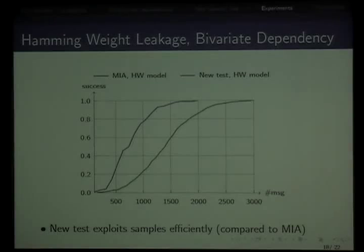We move to a slightly more challenging case. The leakage function is still simple, but now dependencies are bivariate. Correlation and least squares are not applicable as such. You need a distinguisher that can exploit multivariate dependencies. We compared our distinguisher to mutual information, and both work. But this new test is more efficient mainly because of the way it uses samples to estimate just one distribution. It's slightly more efficient than MI, plus there are no parameters to be set, so it's simpler to use.